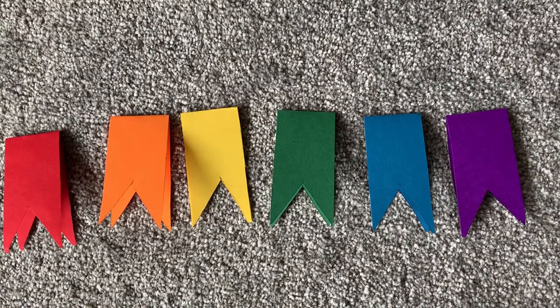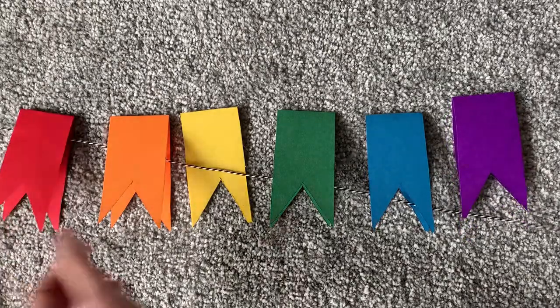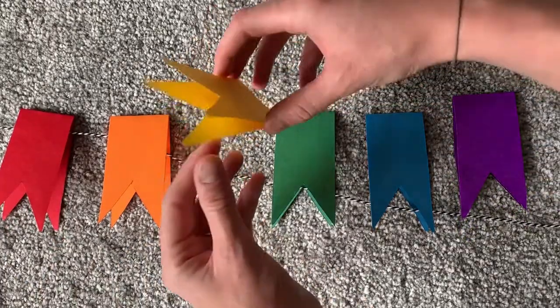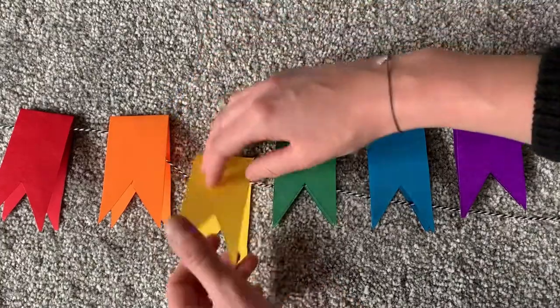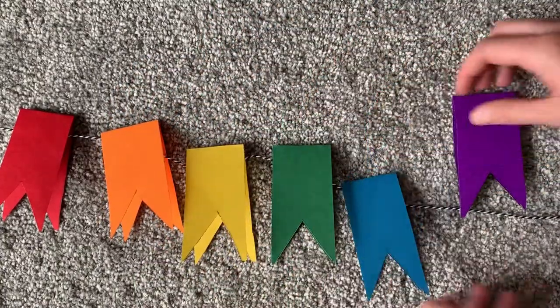So with your piece of string place the flags in the string like so in the order of the rainbow. So we've got red, orange, yellow, green, blue and purple.